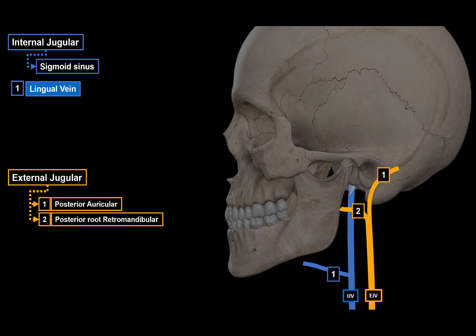The first vein that drains directly into the internal jugular vein is the lingual vein. The lingual vein receives blood from three different veins: the deep lingual vein, the dorsolingual vein, and the sublingual vein, which drains blood from the sublingual gland.